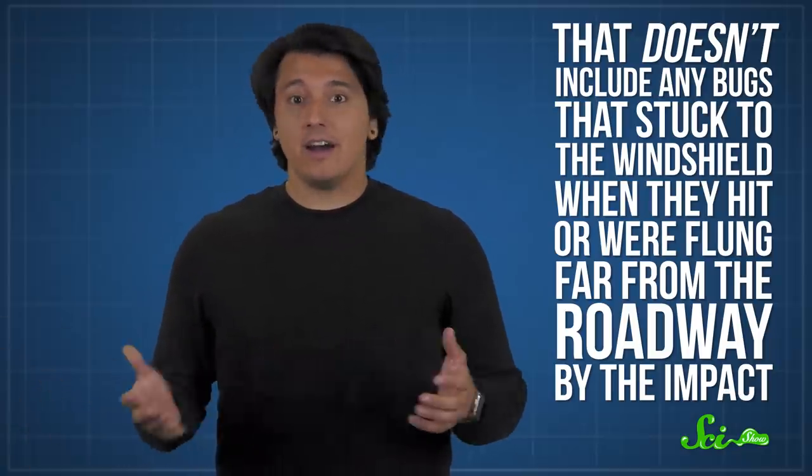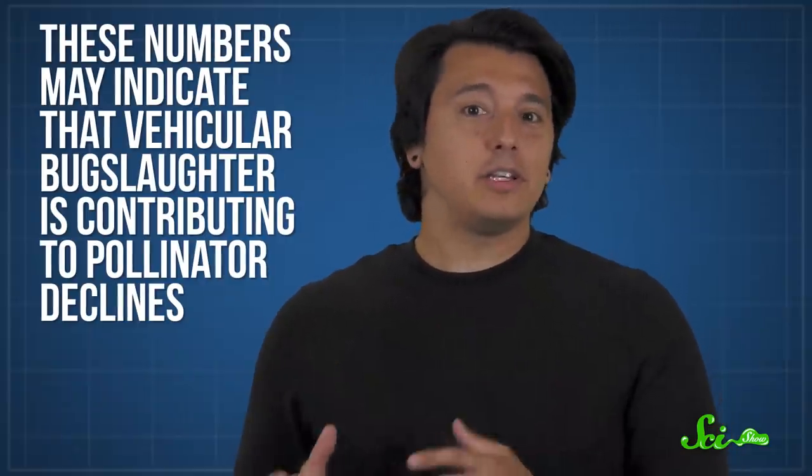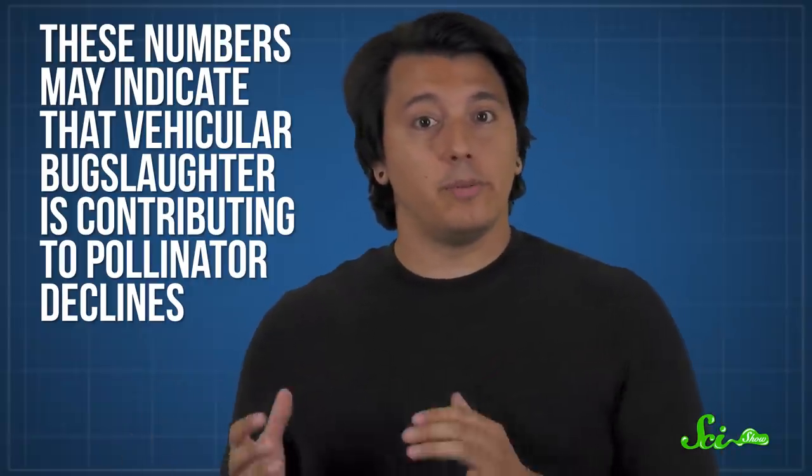So the real numbers are likely higher. According to researchers, these numbers may indicate that vehicular bug slaughter is contributing to the pollinator declines, which would be the exact opposite of what we're going for by planting along roads.